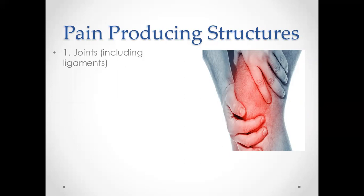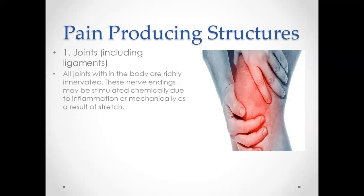All joints within the body are richly innervated. These nerve endings may be stimulated chemically as a result of inflammation, or mechanically as a result of stretch. Any abnormality of movement within the joint can result in stretching of the joint tissues and stimulation of the nociceptor nerve endings.